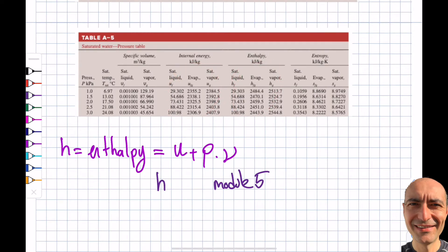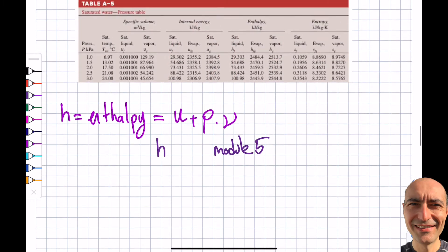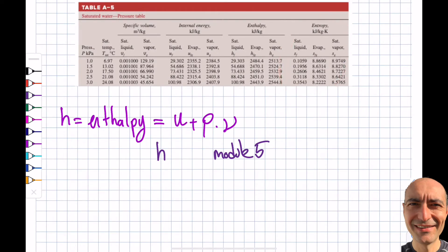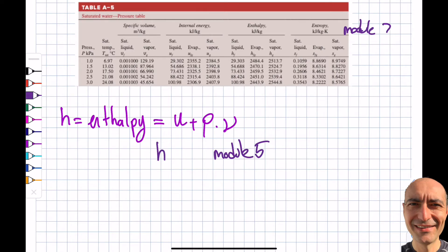The units of H are kJ/kg in SI, consistent with dimensional homogeneity since U and PV share the same units. The next property is entropy, S, which is related to the second law and will be covered in Module 7. Even there, we'll still be referring back to these same property tables.